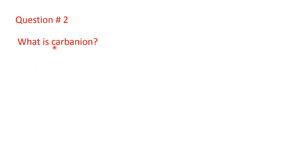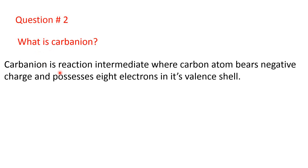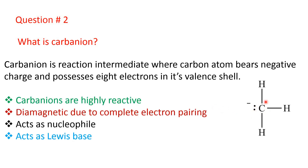Question number two: what is carbon ion? Carbon ion is a reaction intermediate where a carbon atom bears negative charge and possesses 8 electrons in its valence shell. The carbon atom is attached with 3 other atoms or groups, and the other orbital — either pure orbital or vacant orbital — contains this pair of electrons. Altogether, 6 bonded electrons and a pair of electrons, meaning altogether 8 electrons in the valence shell. Carbon ions are highly reactive; they are charged intermediates, so highly reactive. Diamagnetic due to complete electron pairing — all electrons are paired up in the valence shell. They act as a nucleophile (they have negative charge) and act as Lewis base, as this lone pair of electrons can be donated to protons.